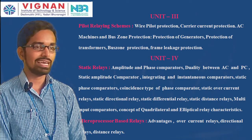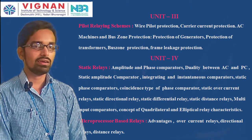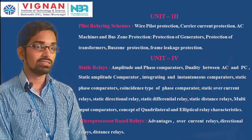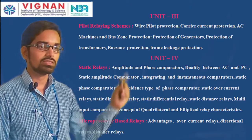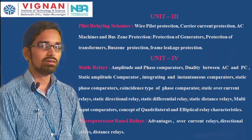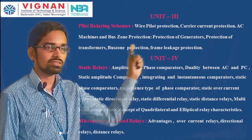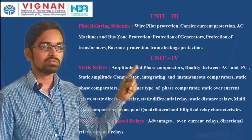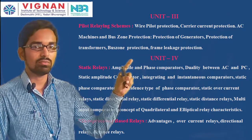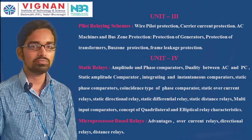Unit three mainly deals with pilot relaying schemes — wire pilot protection and carrier current protection. It also covers protection of AC machines, generators, alternators, transformers, protection of bus bars, and frame leakage protection.